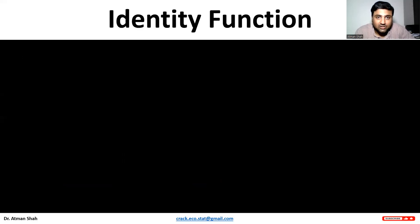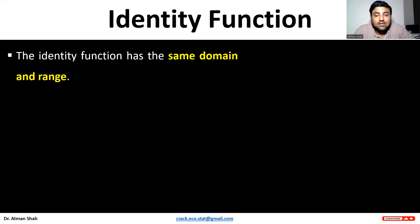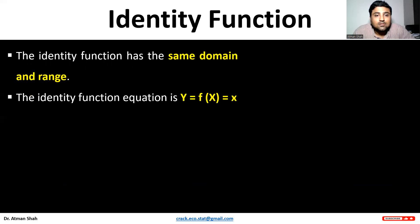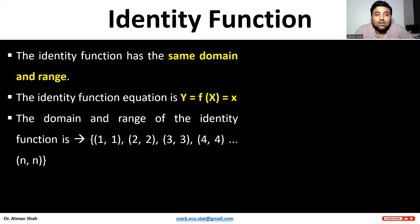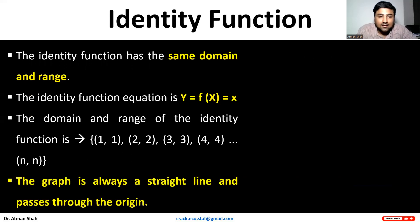First is the identity function. The identity function has the same domain and range. The identity function equation is y = f(x) = x. So the domain and range of the identity function is {1,1}, {2,2}, {3,3}, {4,4}, up to {n,n}. And we always have a straight line that passes through the origin.